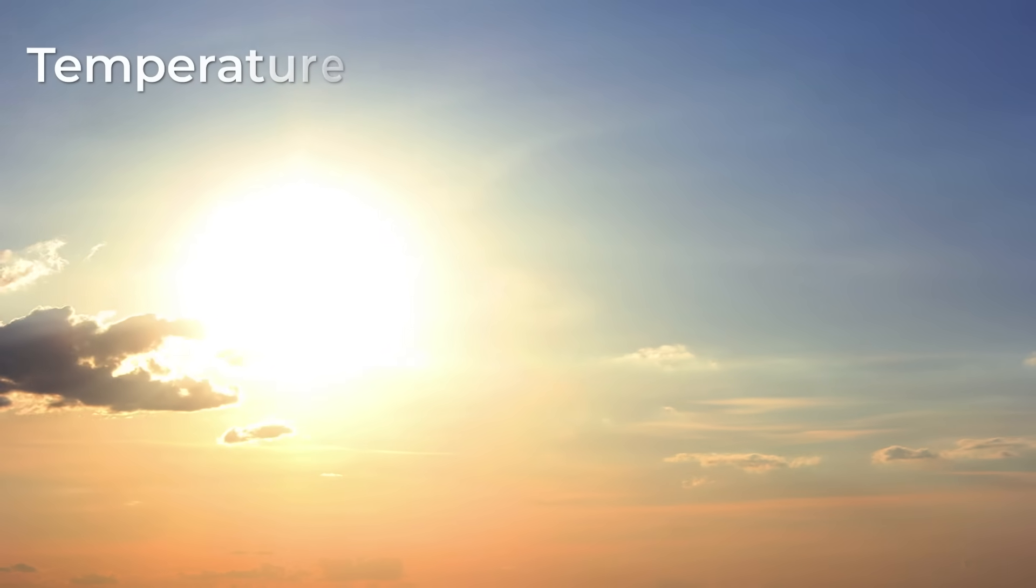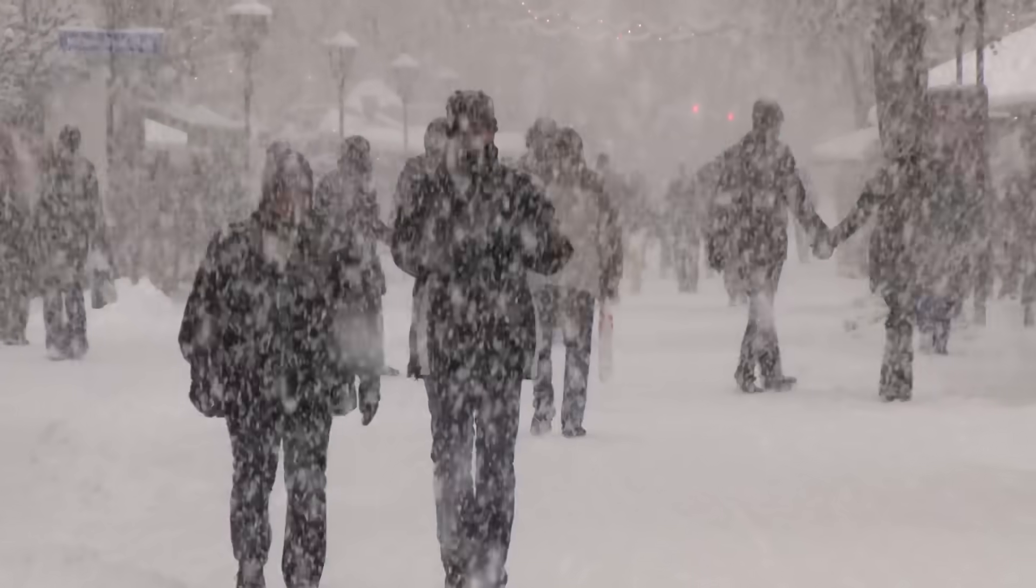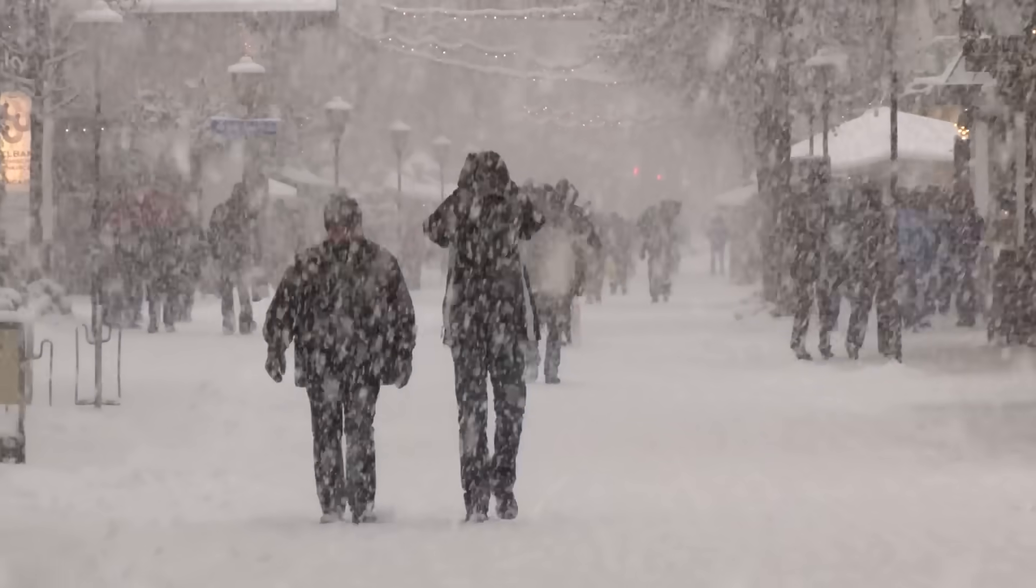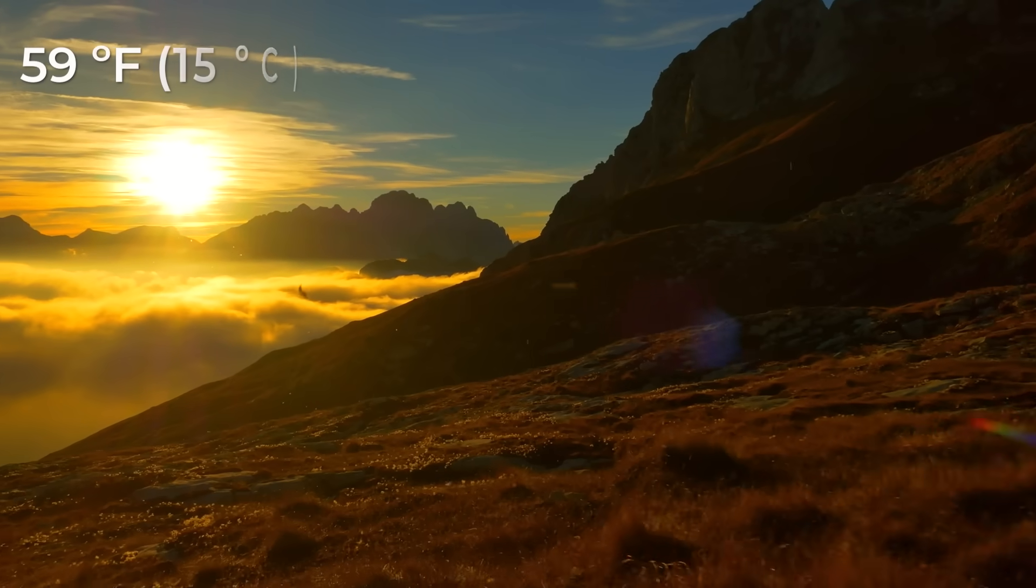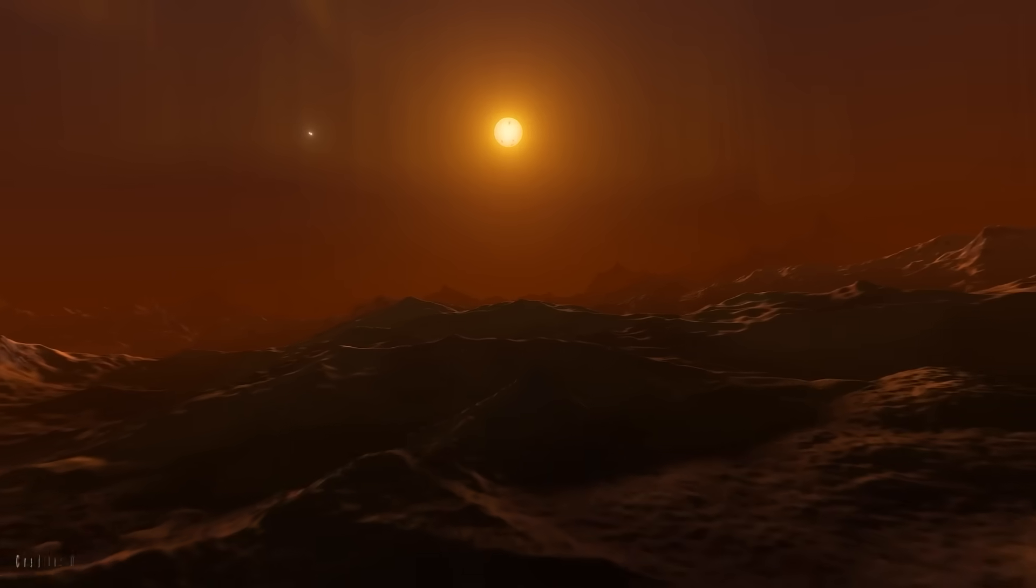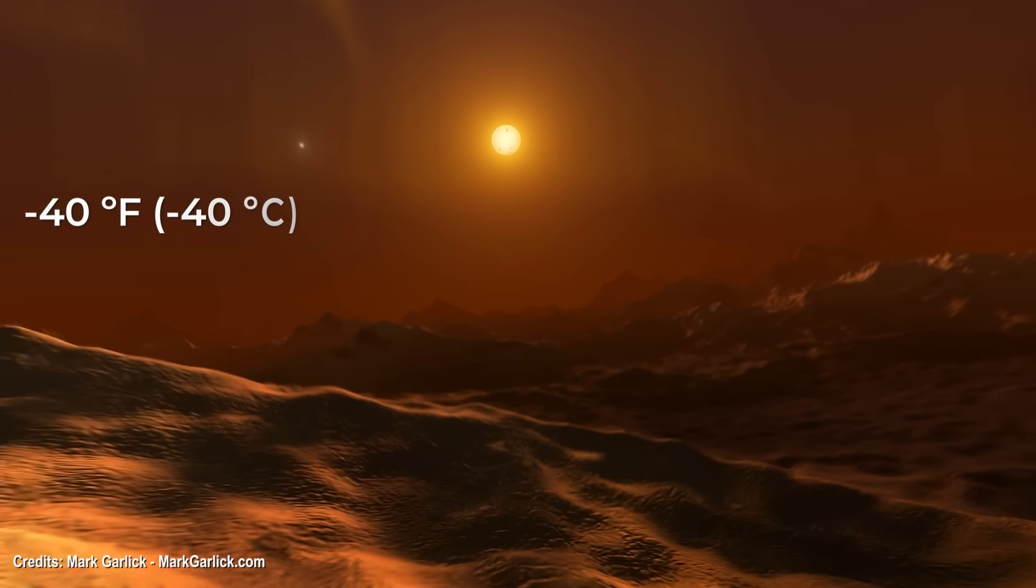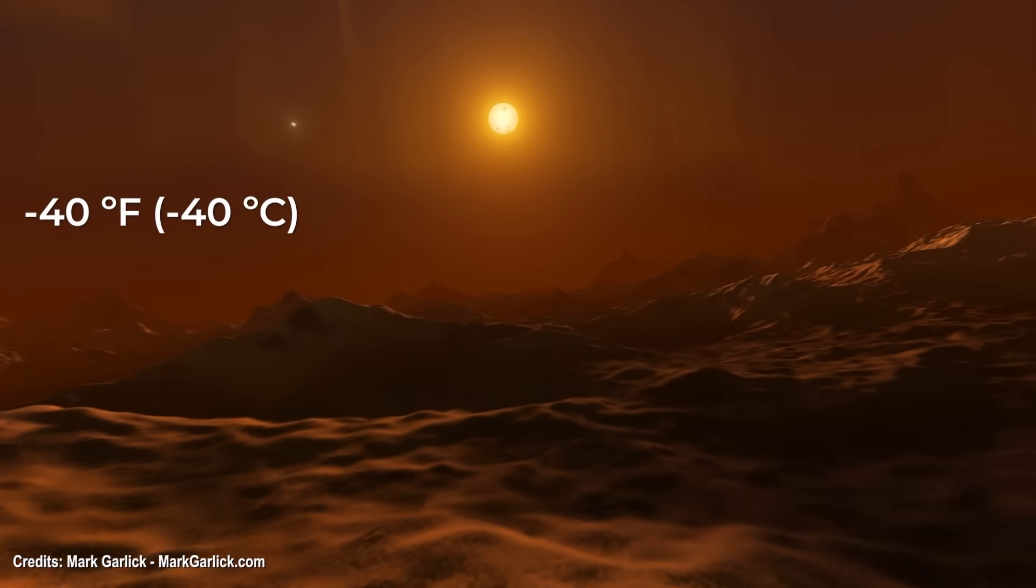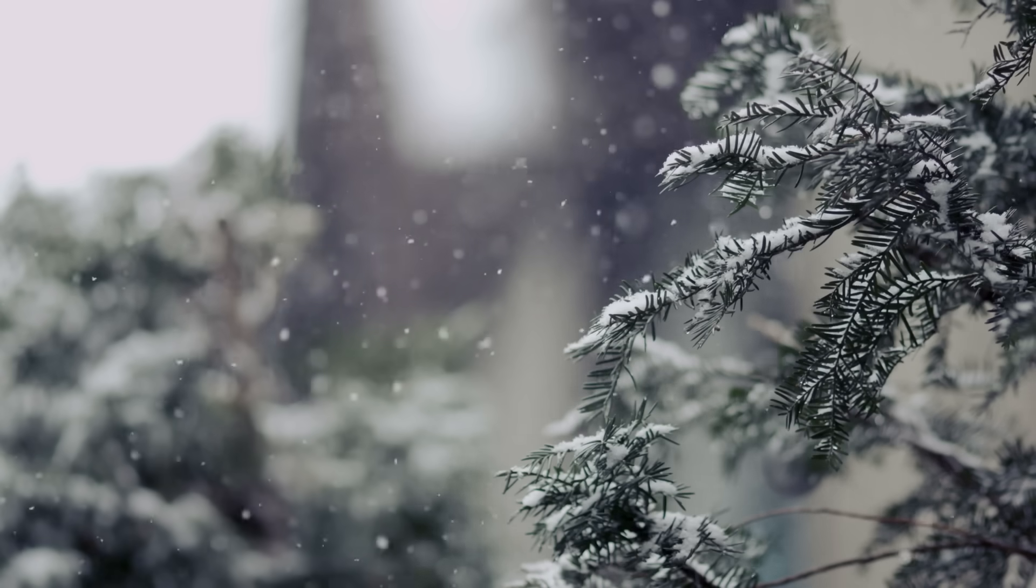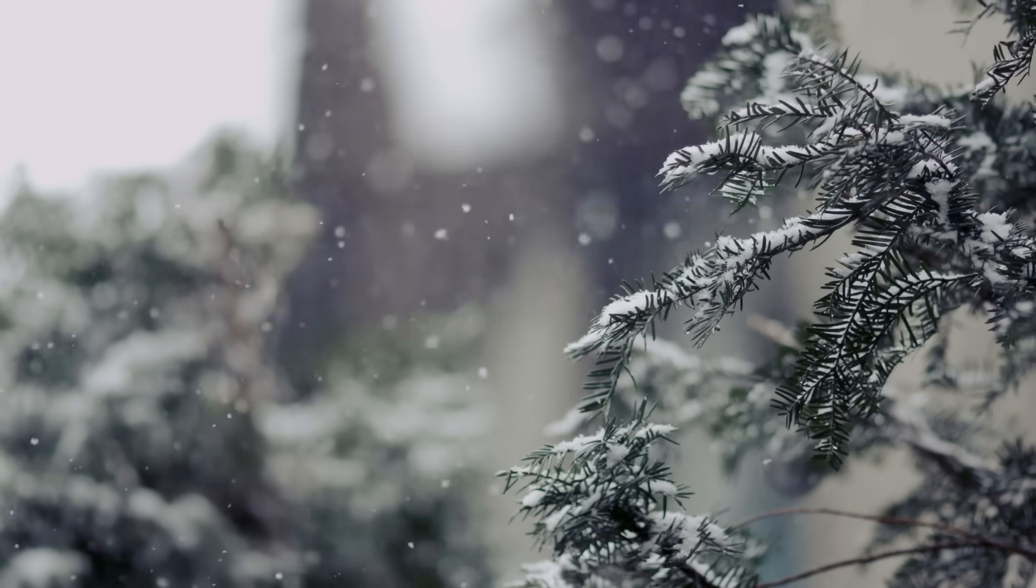The first problem we would face is the temperature. If Earth were to orbit Proxima Centauri, it would be much colder than it is today. The average temperature on Earth is about 59 degrees Fahrenheit or 15 degrees Celsius, while the average temperature in the habitable zone around Proxima Centauri is minus 40 degrees Fahrenheit or minus 40 degrees Celsius. Earth would be freezing at these temperatures and probably not habitable for life as we know it.